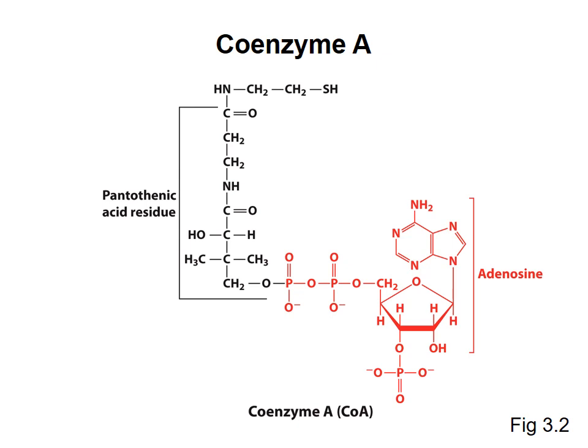To finish off the video I want to introduce coenzyme A, which will come up a number of times in the remaining metabolism section. The A stands for adenosine — we have an adenine nitrogenous base coupled to a sugar with some phosphates, that's the nucleotide adenosine. Attached to that nucleotide is a pantothenic acid residue, which is derived from vitamin B5, and that's how your body uses that vitamin. At the top of the molecule you can see an SH group or thiol group, and this is the important part of the molecule as far as the chemistry goes, because you can add other smaller molecules onto this thiol group in a thioester linkage.